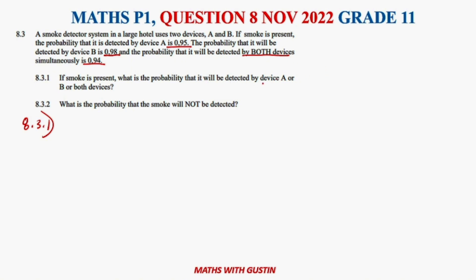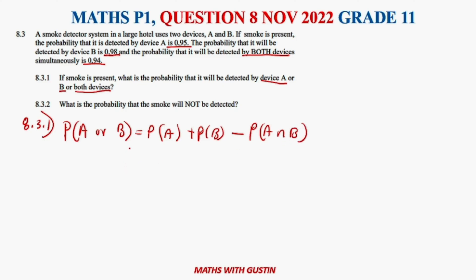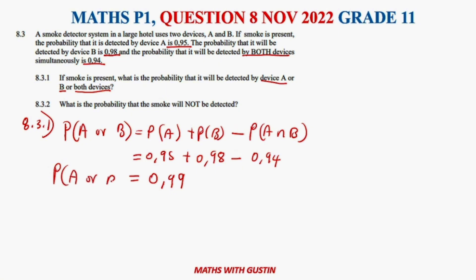Question 8.3.1 asks: if smoke is present, what is the probability it will be detected by device A or device B or both? Using the general formula: P(A or B) = P(A) + P(B) − P(A and B), we get 0.95 plus 0.98 minus 0.94, which equals 0.99.